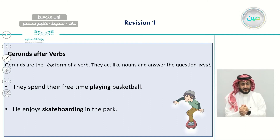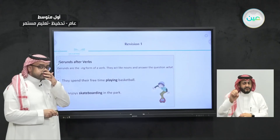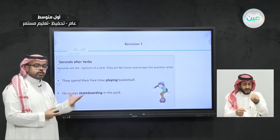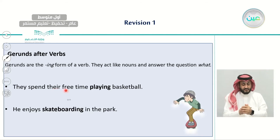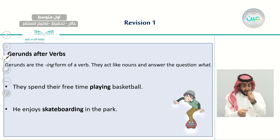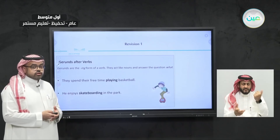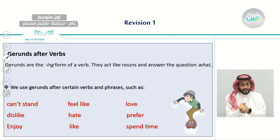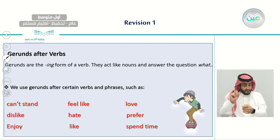The last part of this unit covered form, meaning, and function. We talked about gerunds — these are nouns that take the form of a verb, ending in -ing. For example: 'They spend their free time playing basketball' — here 'playing' is a noun, not a verb; the verb in the sentence is 'spend'. We use gerunds after certain verbs like can't stand, dislike, enjoy, feel like, hate, like, love, prefer, and spend time.